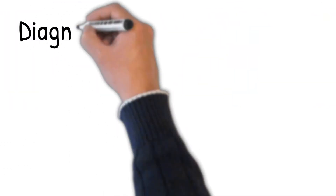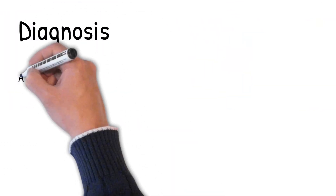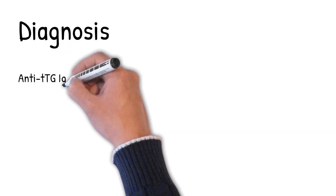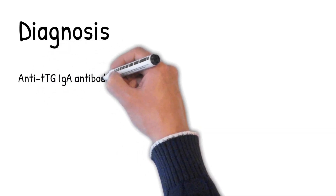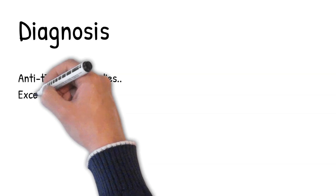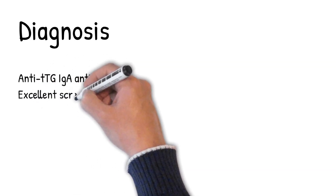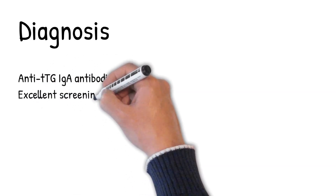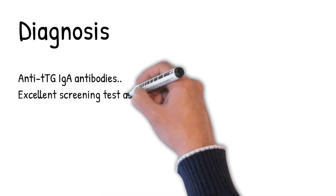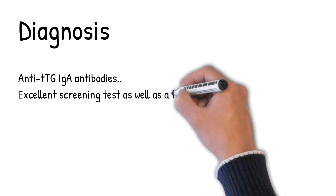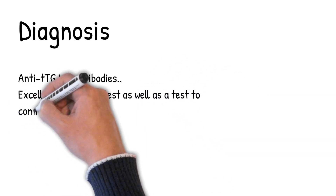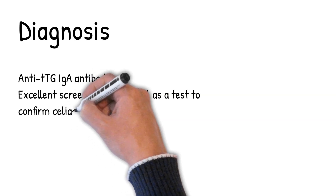Important diagnostic antibodies include Anti-TTG IgA antibodies, with a sensitivity of 90% to 98% and specificity of 95% to 97%. This is an excellent screening test as well as a test to confirm celiac disease.